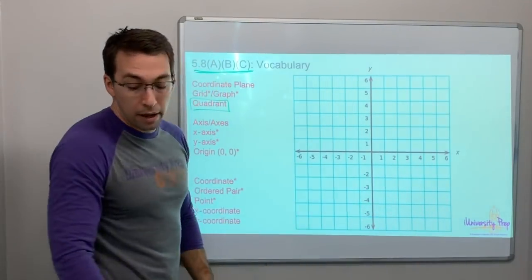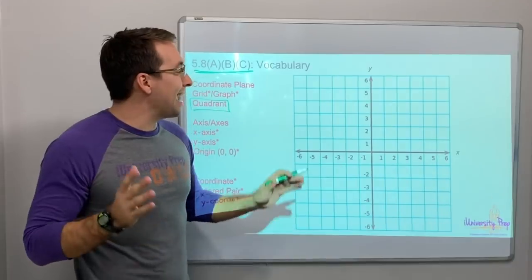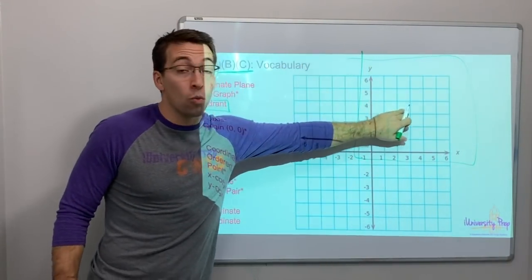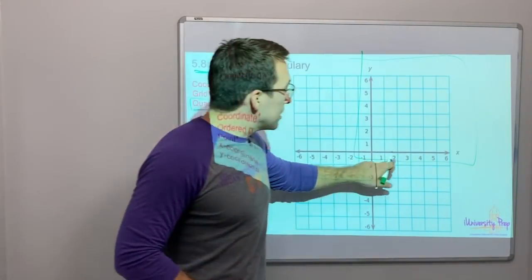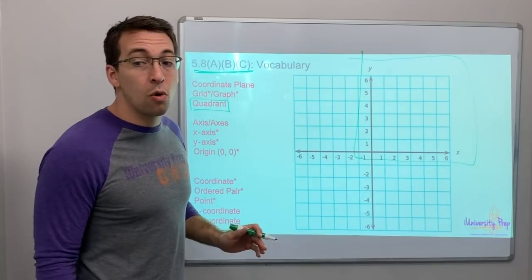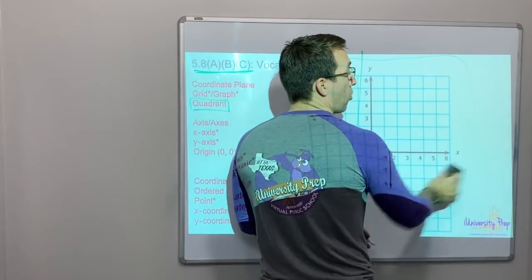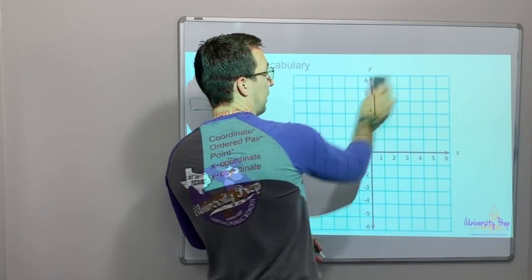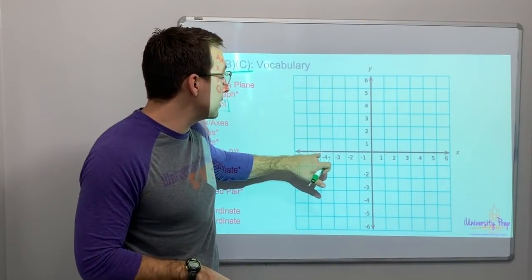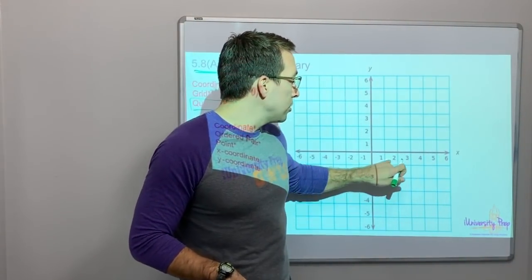Quadrant one, two, three, and four. You guys don't have to know quadrant one, two, three, four, but there are four quadrants. In this test, in fifth grade, you're going to stick to quadrant one: positive numbers, positive numbers. You can create the coordinate plane by creating two number lines.